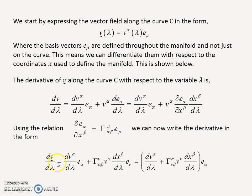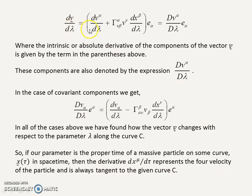Using this expression, we can rewrite the derivative as an expression involving gamma. We notice that we have e^α and e^ν. We can factorize out the basis vector because the dummy index ν here can be swapped with the alpha index — the label is irrelevant. So we swap to alpha and factorize out the basis vector e^α. Our derivative can now be expressed as the expression in brackets times the basis vector. This expression in brackets is the intrinsic or absolute derivative of the components of the vector along the curve.